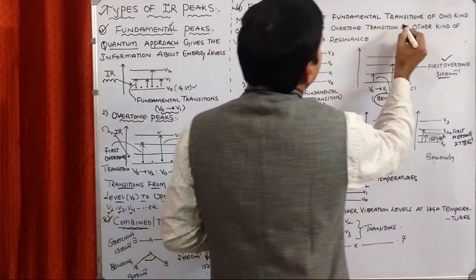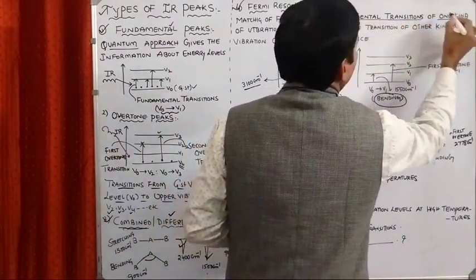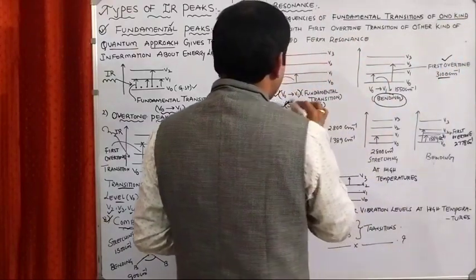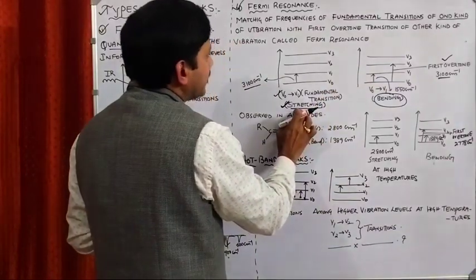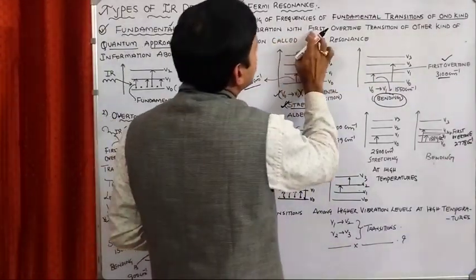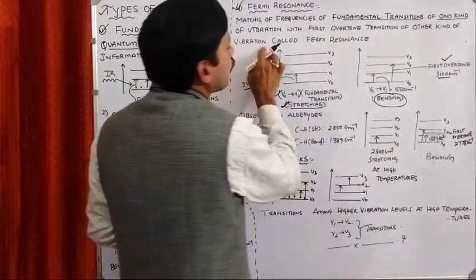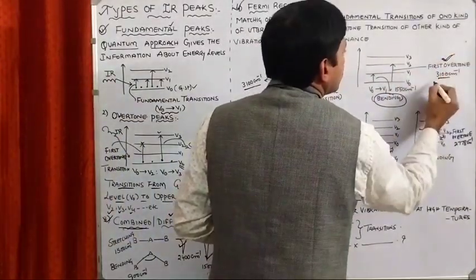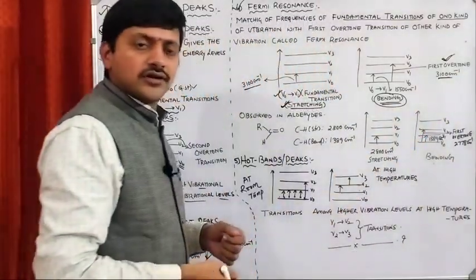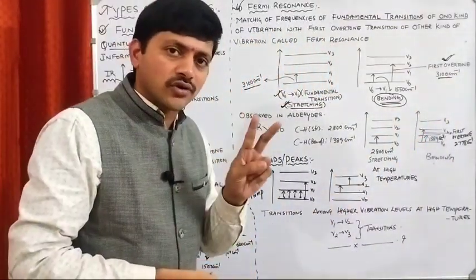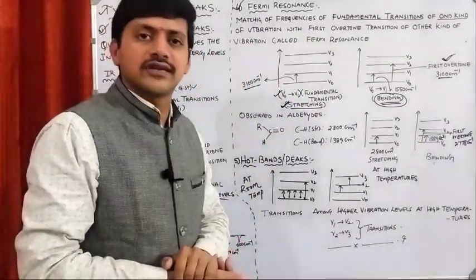Fermi resonance involves the matching of the frequency of the fundamental transition of one kind of vibration — here, the stretching vibration — with the first overtone transition of another kind of vibration — here, the bending vibration. When these two values are the same, that situation is called Fermi resonance.